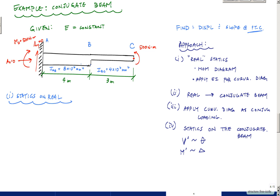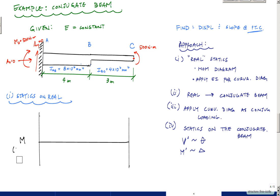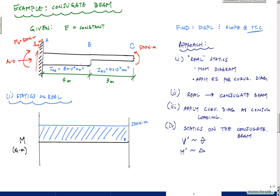Next is the moment diagram, which is also pretty straightforward. In newton meters, the moment diagram is simply constant all the way across at 500 newton meters. That's the moment diagram.